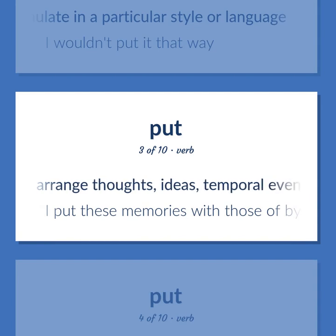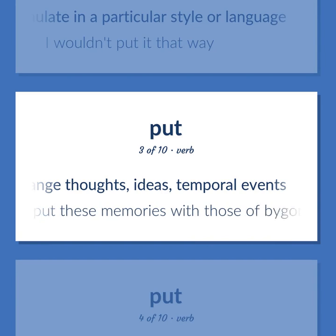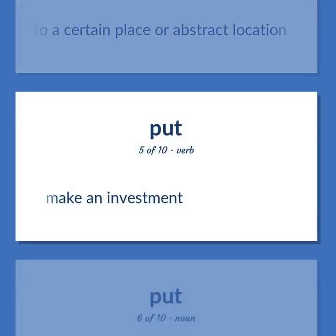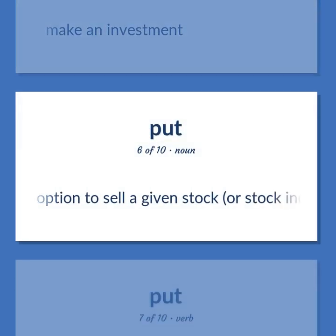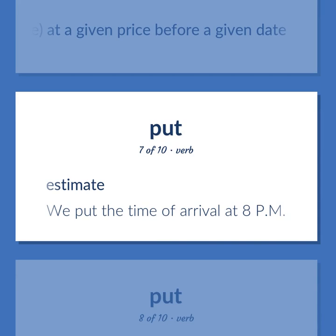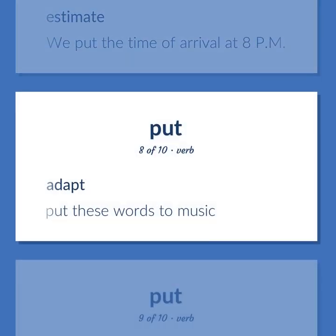Arrange thoughts, ideas, temporal events. I put these memories with those of bygone times. Put into a certain place or abstract location. Make an investment. The option to sell a given stock, or stock index, or commodity future, at a given price before a given date. Estimate. We put the time of arrival at 8pm. Adapt. Put these words to music.